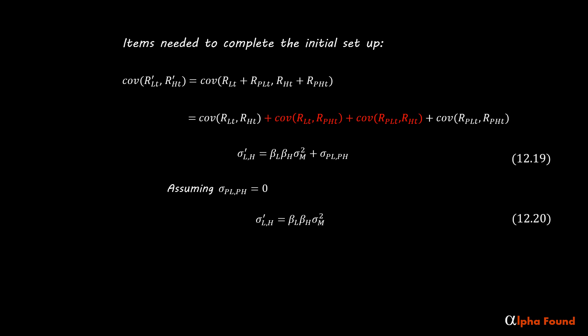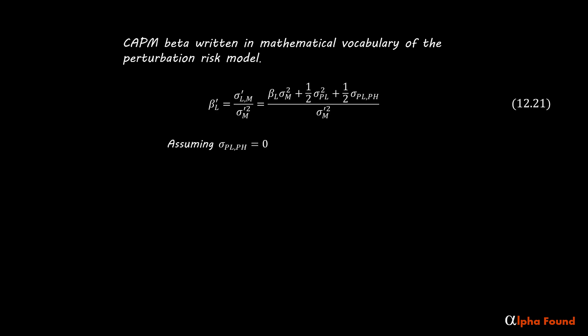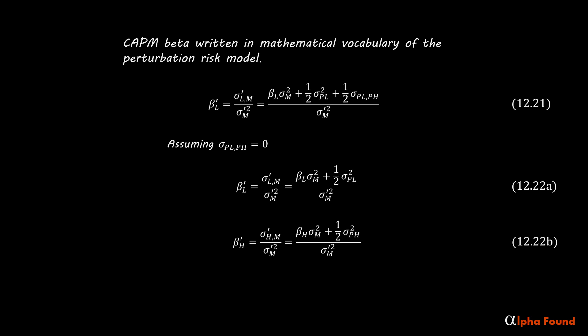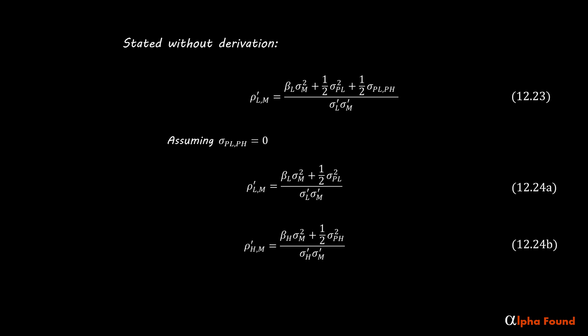Finally, using this information, I want to show the formula for CAPM beta written in the mathematical vocabulary of the perturbation risk model, assuming that the covariances are zero. And finally, stated without derivation. In this video, there have been a whole lot of formulas without calculation. The next video will have an example that will clarify what it all means, but it will only be a small piece of the story. Before I end, here is a summary of the formulas set to music.